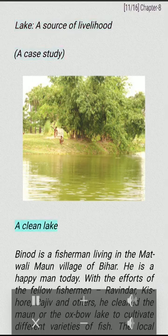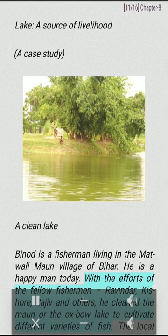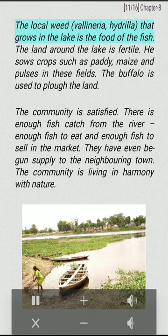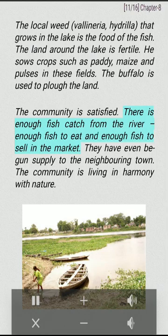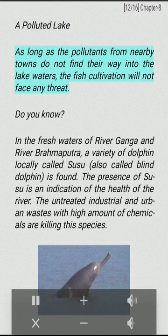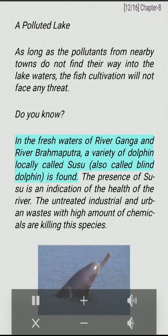Lake — a source of livelihood. A case study: A clean lake. Bainad is a fisherman living in the Matwaliman village of Bihar. He is a happy man today. With the efforts of fellow fishermen Ravinder, Kishore, Rajiv and others, he cleaned the oxbow lake to cultivate different varieties of fish. The local weed hydrilla that grows in the lake is the food of the fish. The land around the lake is fertile; he sows crops such as paddy, maize and pulses. The buffalo is used to plow the land. There is enough fish to eat and enough to sell in the market, and they have begun supply to the neighboring town. The community is living in harmony with nature. However, as long as the pollutants from nearby towns do not find their way into the lake waters, fish cultivation will not face any threat. In the fresh waters of river Ganga and river Brahmaputra, a variety of dolphin locally called Susu, also called the blind dolphin, is found. The presence of Susu is an indication of the health of the river.